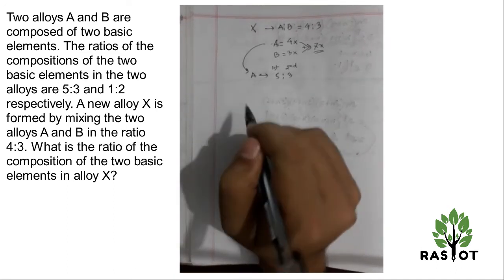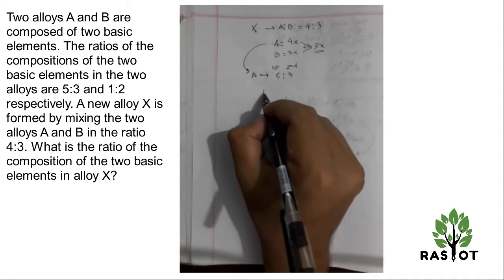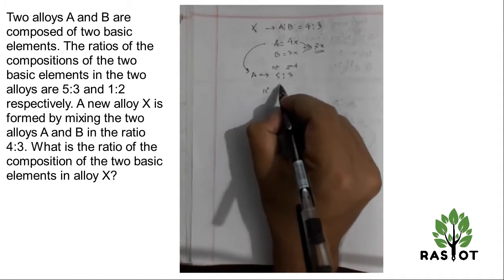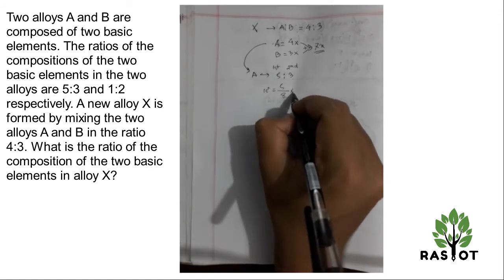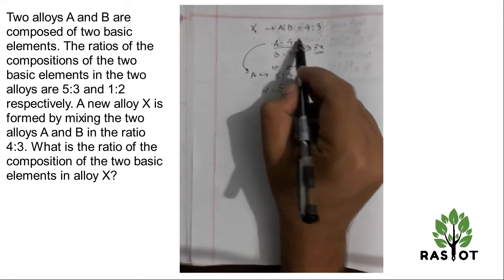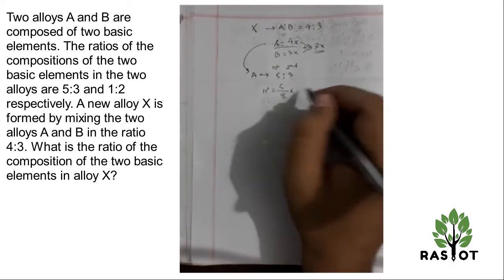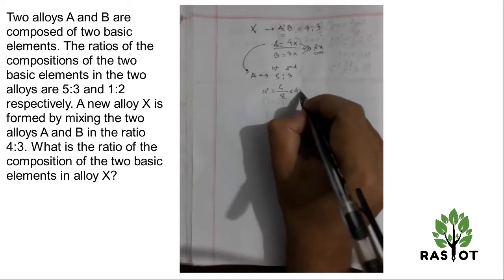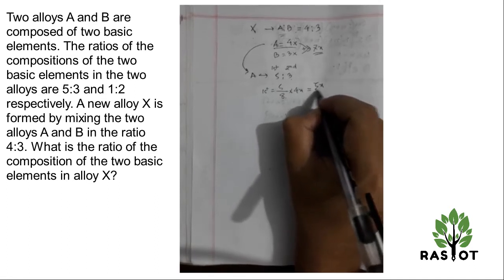If you can see the first element of the total mixture, the first element is 5 divided by 5 plus 3, that's 5 by 8. So 5 by 8 into 4X will give me 5X divided by 2.